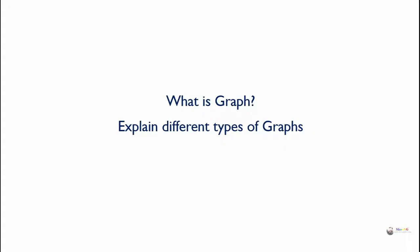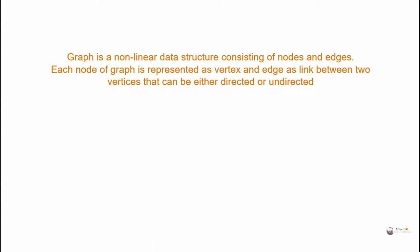A graph is a non-linear data structure consisting of nodes and edges. Each node of a graph is represented as a vertex, and an edge is a link between two vertices that can be either directed or undirected.